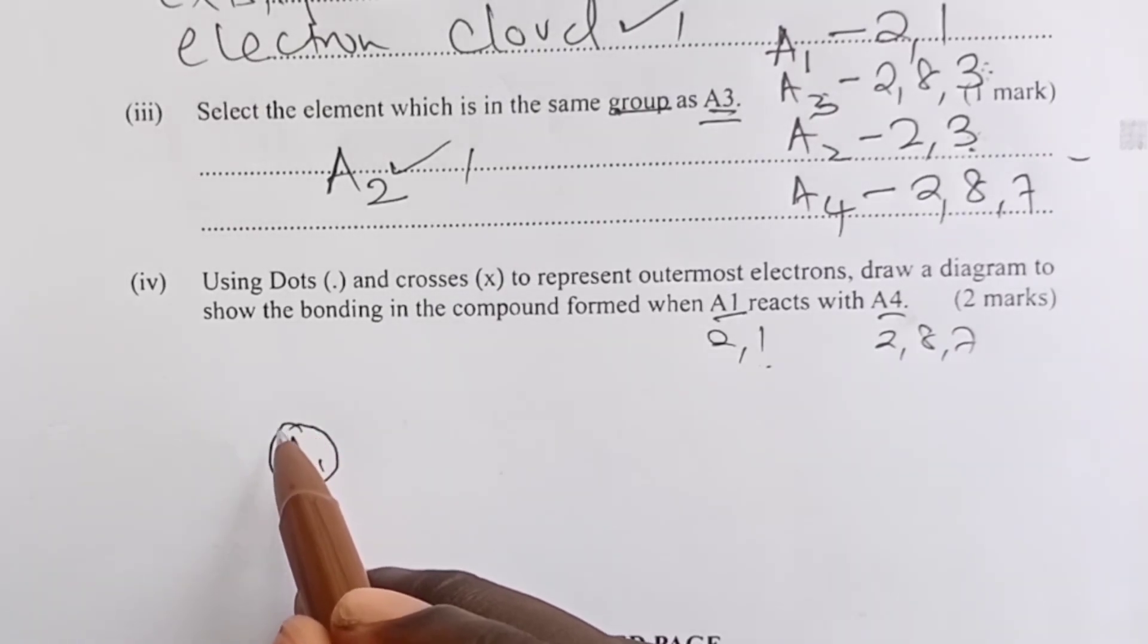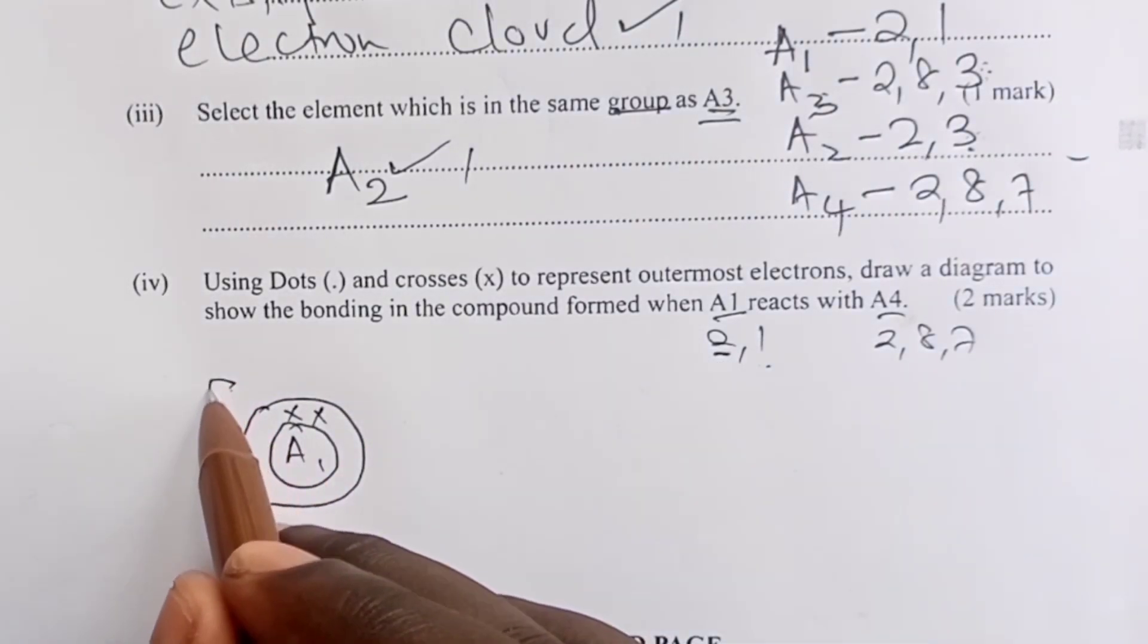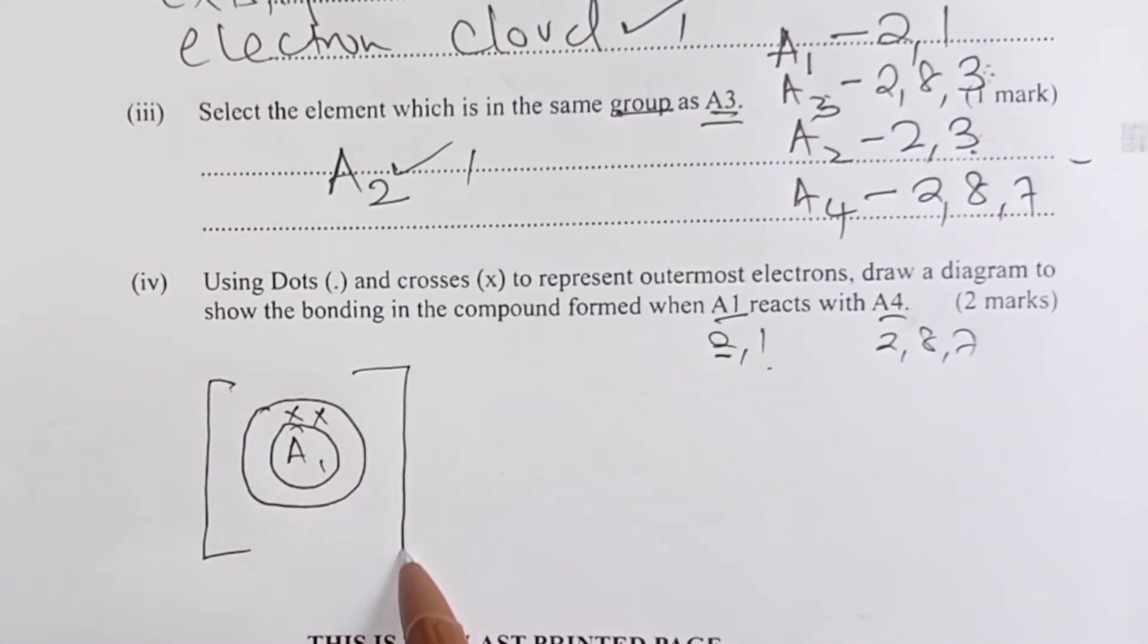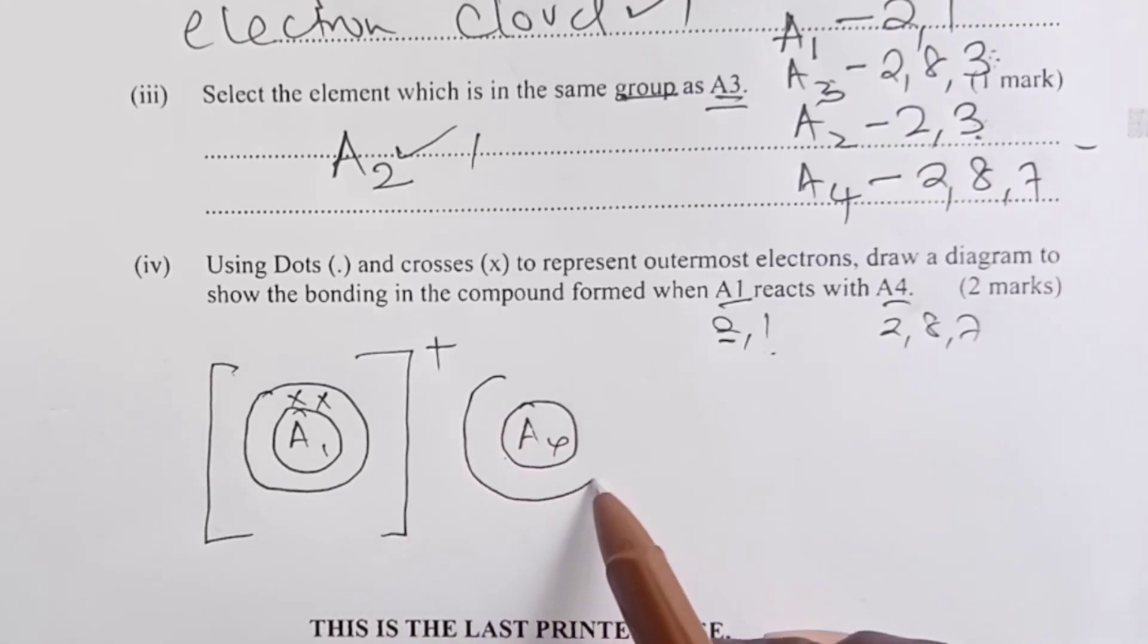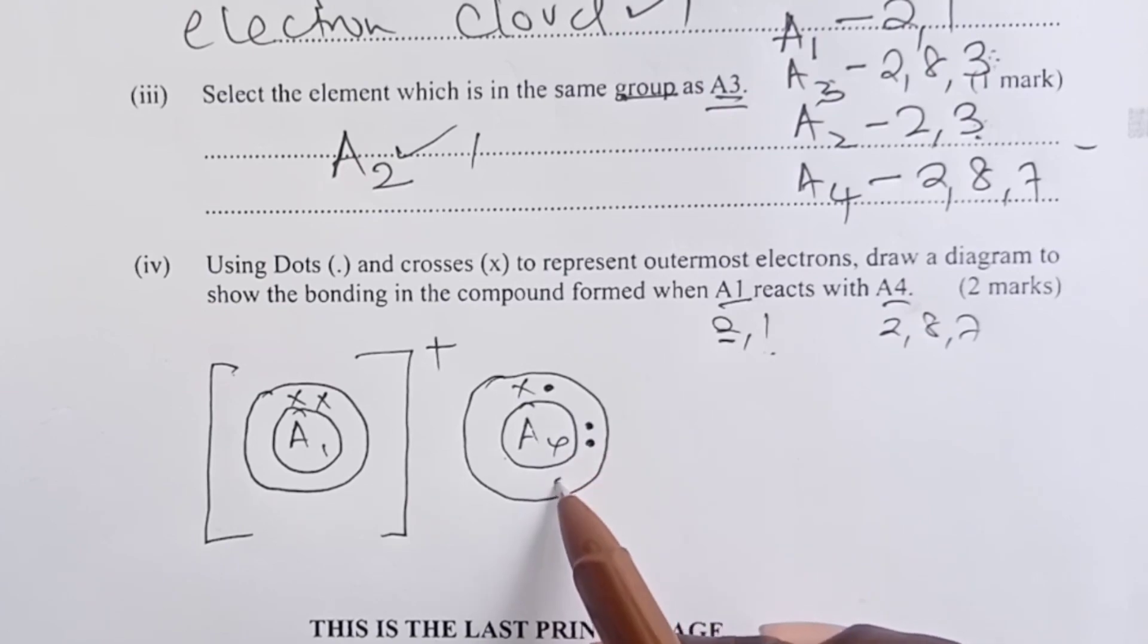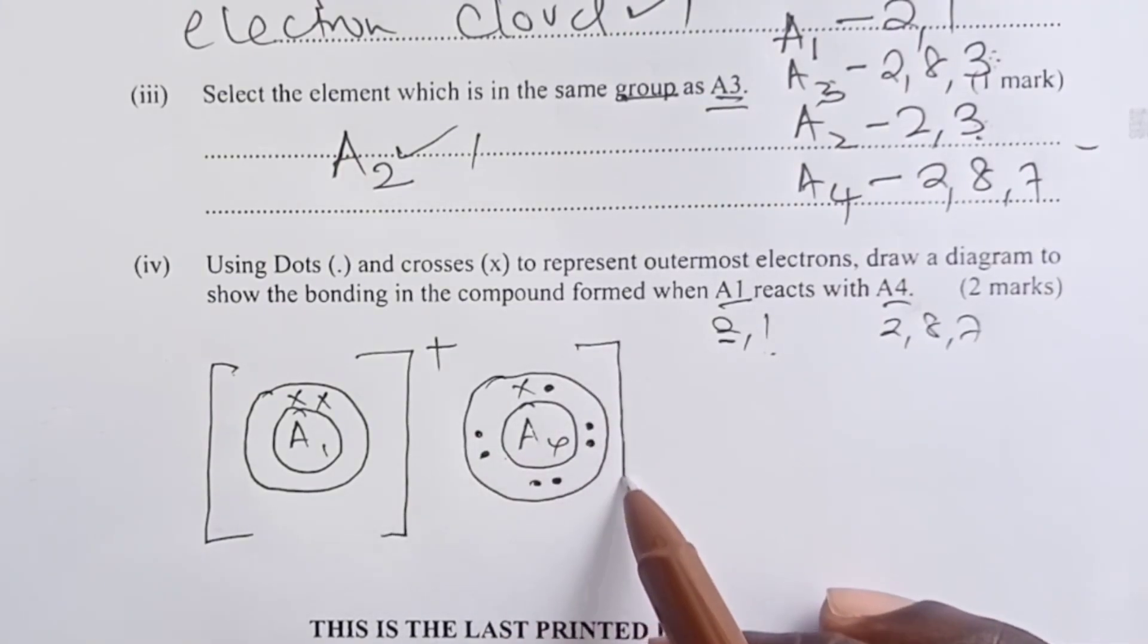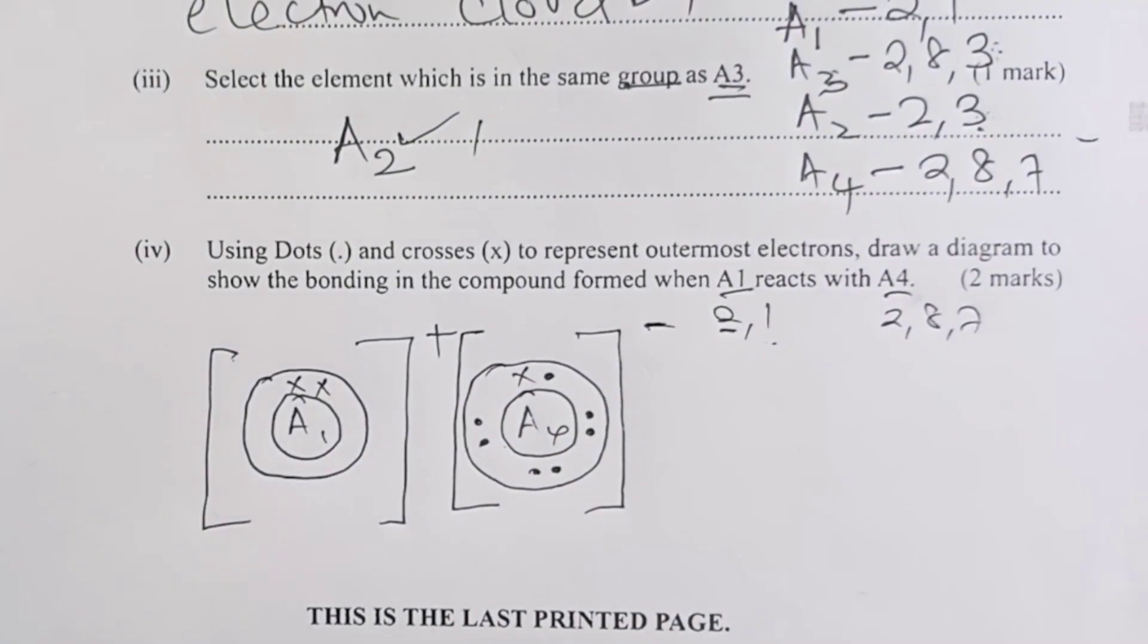One will have been lost. And this way, we are forming a cation. And then A4 would be here. It will now have eight electrons on the outermost shell, one having been received from A1. And then it will now form an anion. And therefore, ionic bond would exist.